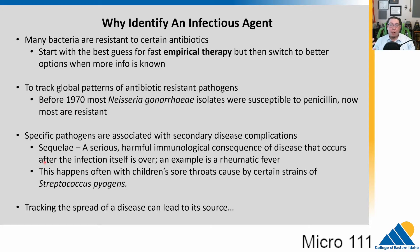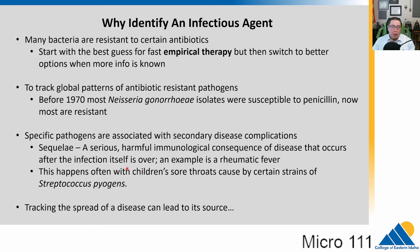Specific pathogens are often associated with secondary disease complications, called sequelae — something like rheumatic fever. A streptococcus infection can leave toxins behind, so even after the infection clears, it can lead to damage to the heart. Children with strep throat may later show symptoms of rheumatic fever. We also have to identify microbes to track the spread of disease, particularly during outbreaks, since knowing the type limits the possible sources.